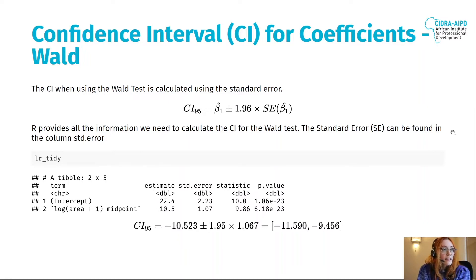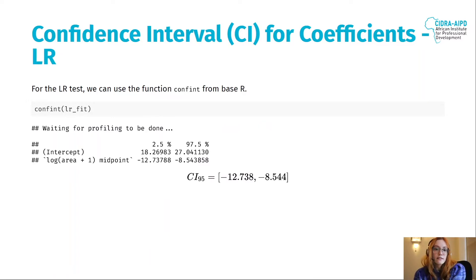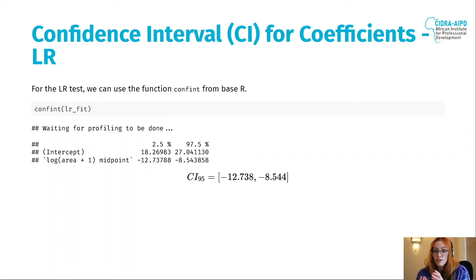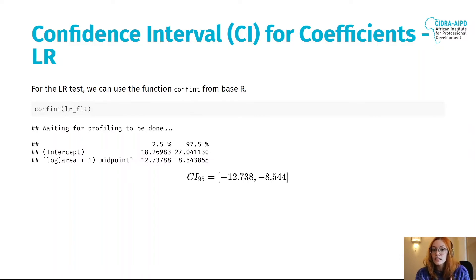We can do the same for the likelihood ratio test. For that, we use the confint function from base R — again no installation needed. We pass the logistic regression fit, and the result is from minus 12.7 to minus 8.5. You can also give the confidence level as an argument — the standard is 95%, but you can specify 99% or whatever you need for your analysis; it's not fixed at 95%.